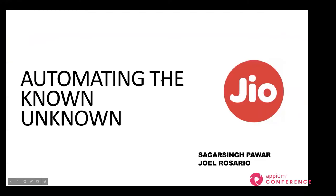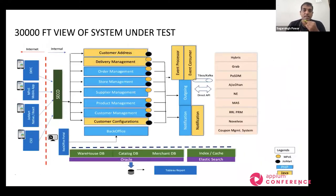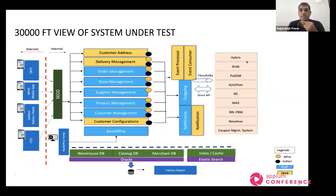Welcome on board everyone for this case study — we'll be presenting 'Automating the Known Unknown.' Before getting into details, I want to give a 30,000-foot view of our application system to convey the complexity involved in testing it. We have client applications, an edge layer, microservices like consumers and producers, Kafka, databases, Elasticsearch, cache, and most importantly, external systems on the far right of the diagram.